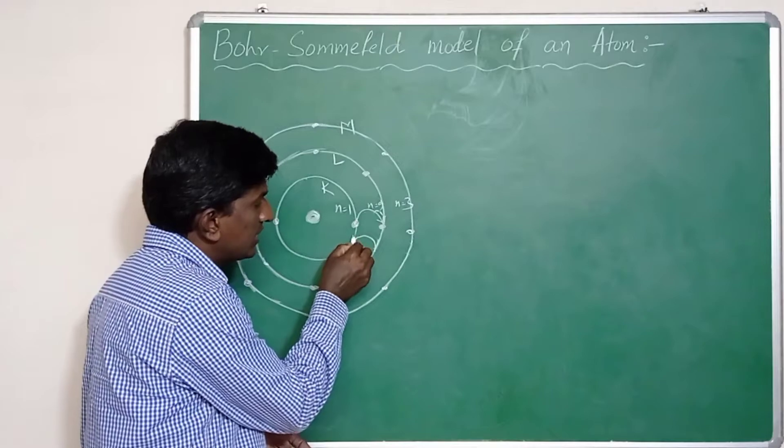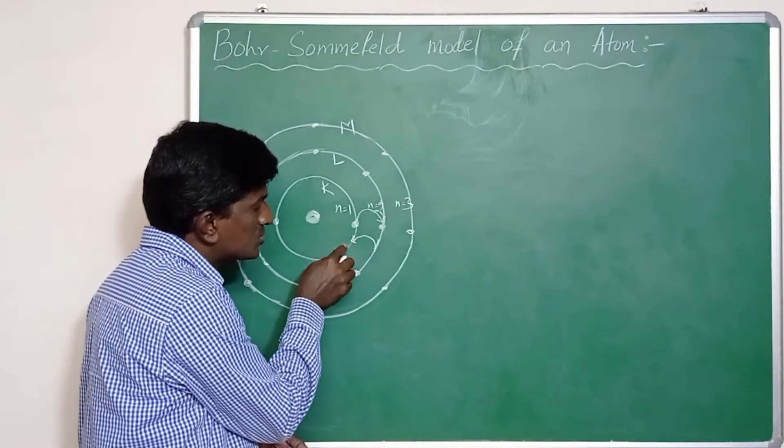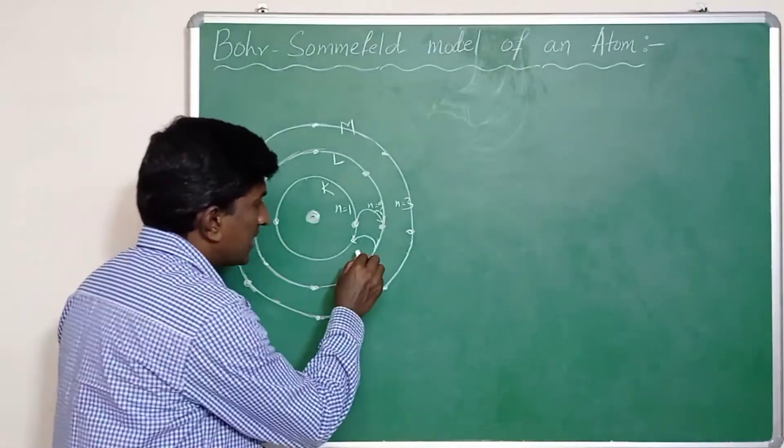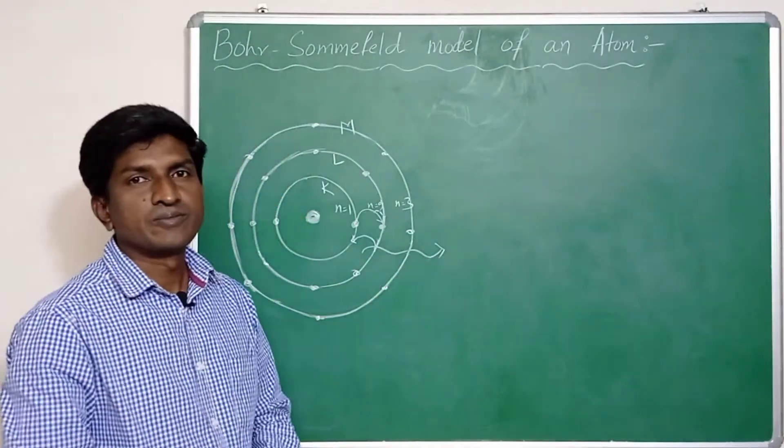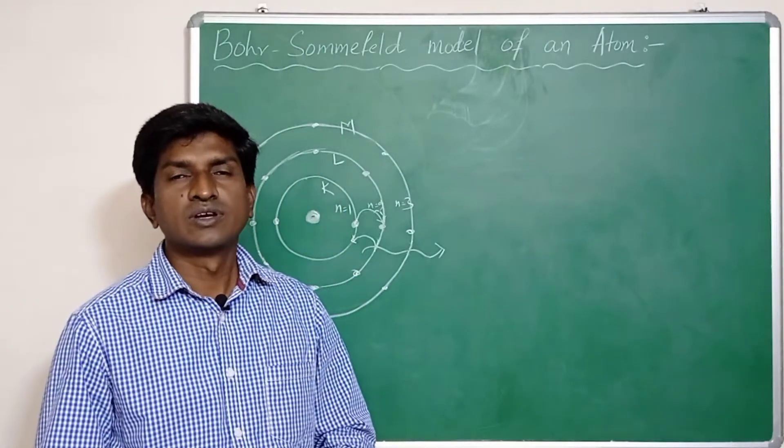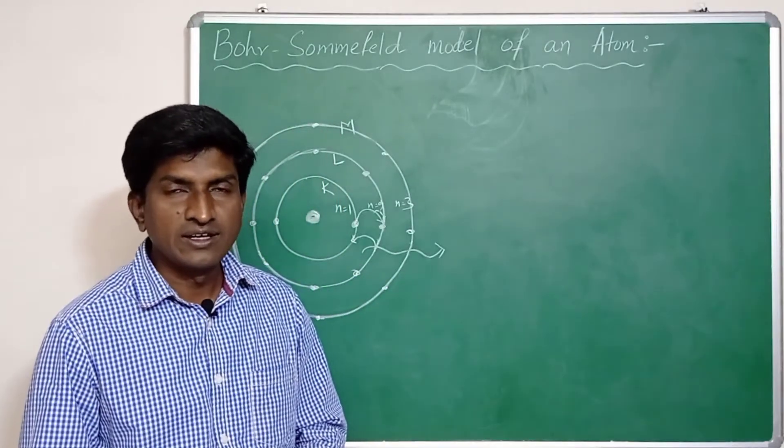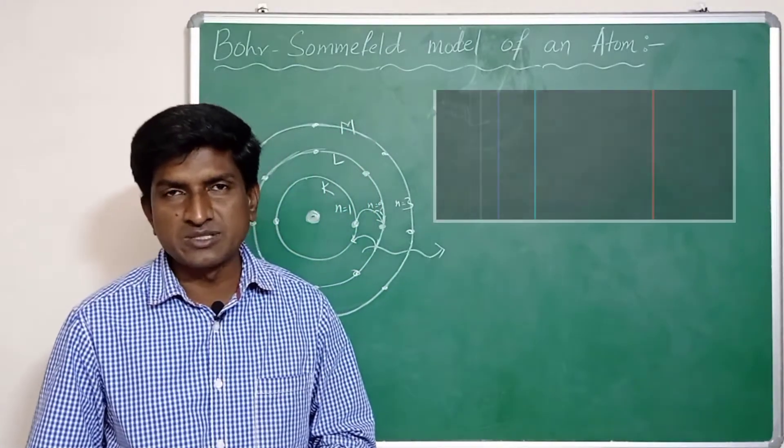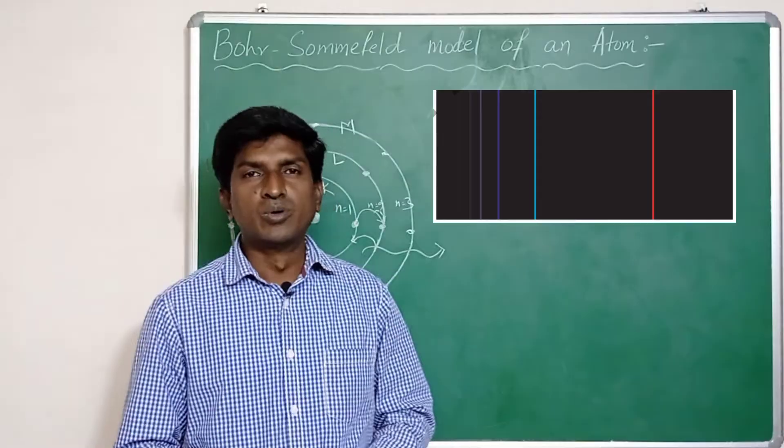When the emitted energy has the wavelength of visible light, this emission of energy appears as a spectral line. Bohr's atomic model could explain the structure of hydrogen atom successfully and explained all spectral lines of hydrogen.